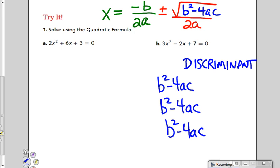It could be equal to 0, greater than 0, what's the third option, or less than 0. This will tell me how many solutions to expect.